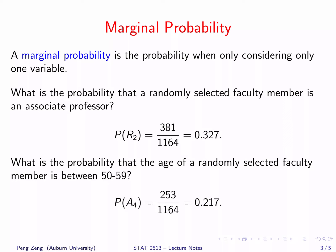The last row of the contingency table lists the frequencies of faculty members for all different ranks. Recall that probability is calculated as the ratio of the number of outcomes in the event to the total number of outcomes. The event here is R2, or associate professor, which has 381 faculty members. The total number of faculty members is 1164. Therefore, the probability is 381 over 1164, which is 0.327.